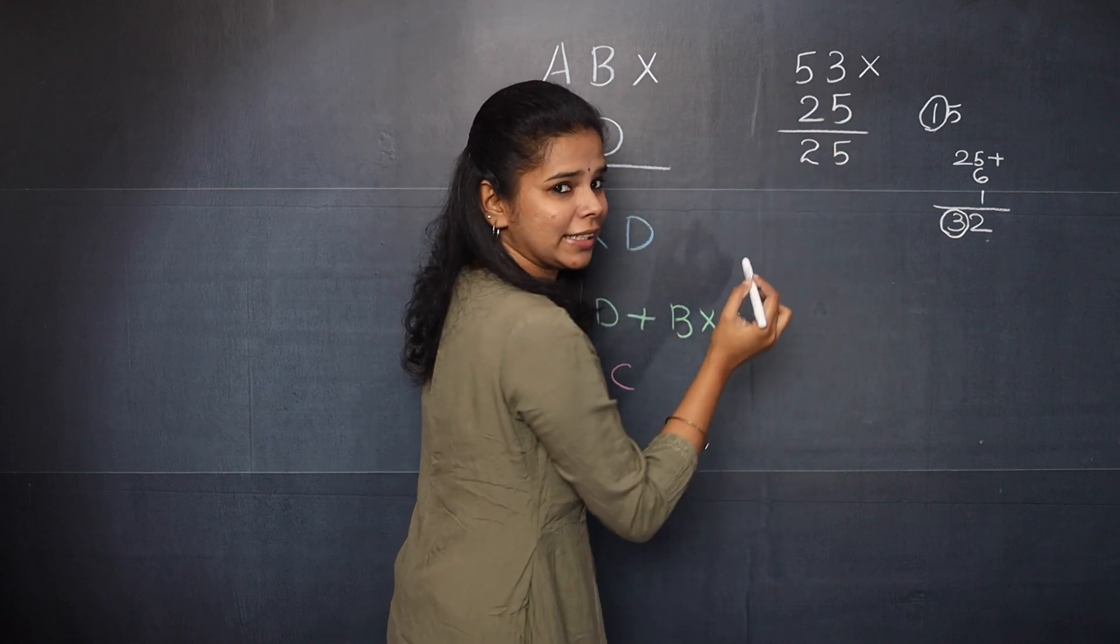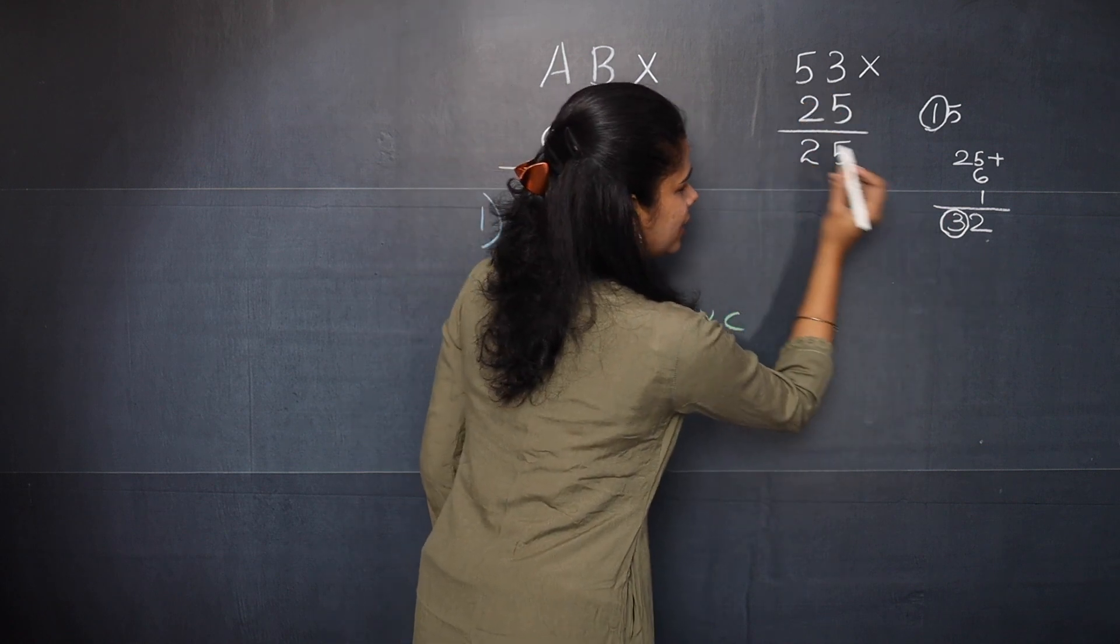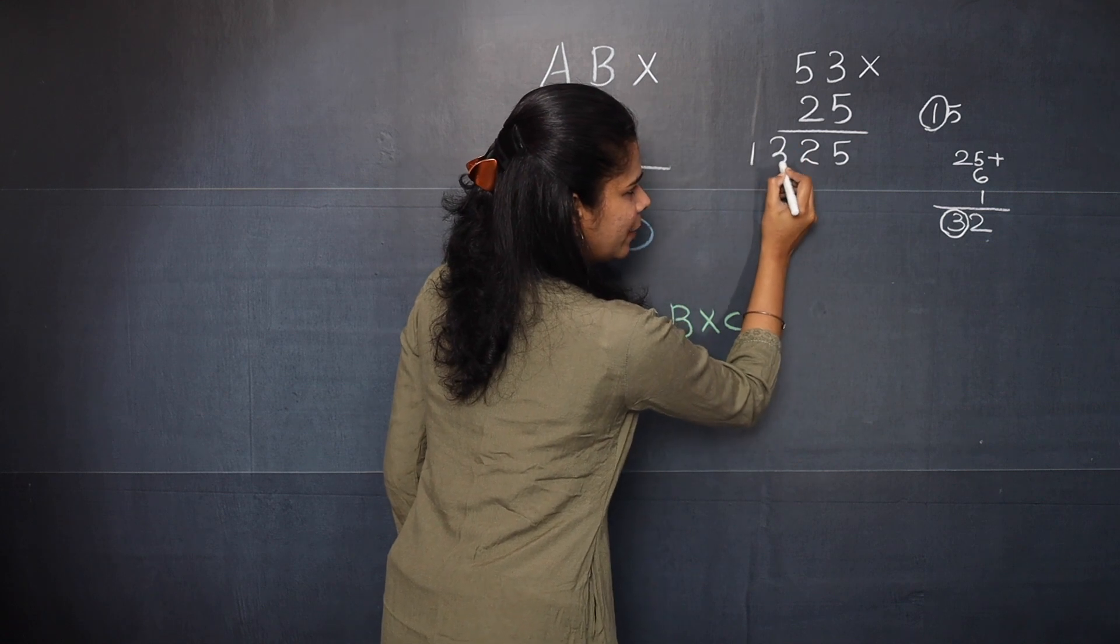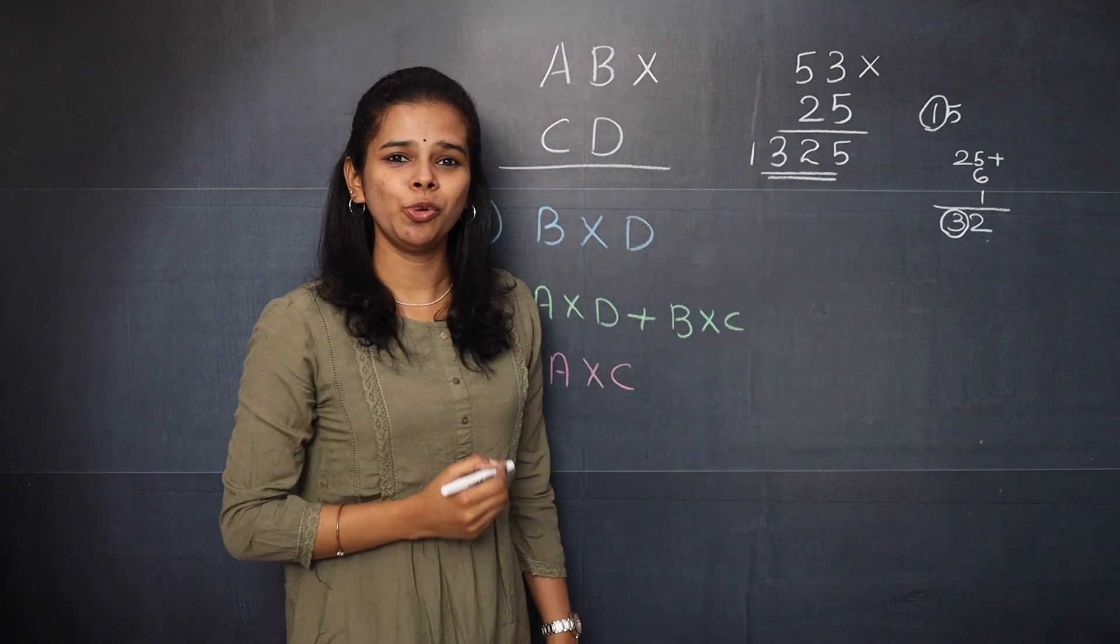So what is 2 into 5? That is 10. And 10 plus 3 is 13. So your answer is 1, 3, 2, 5.